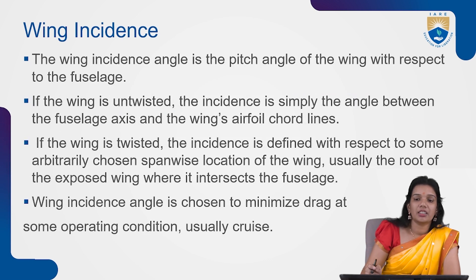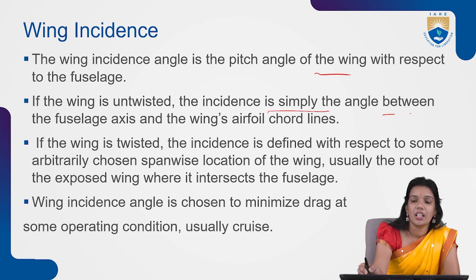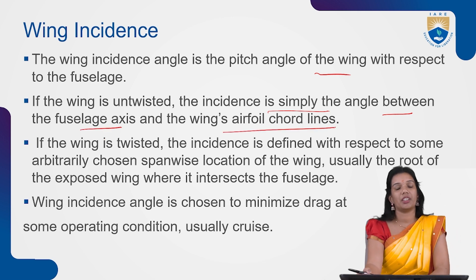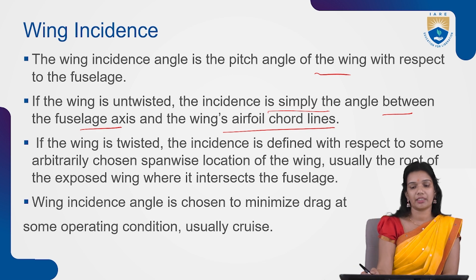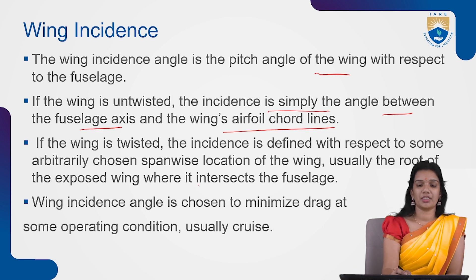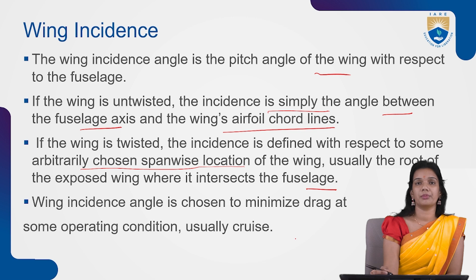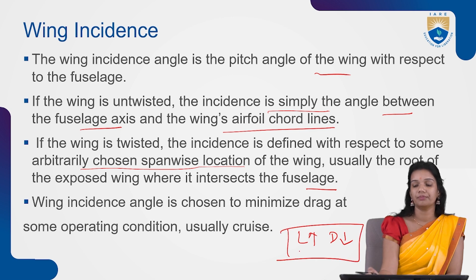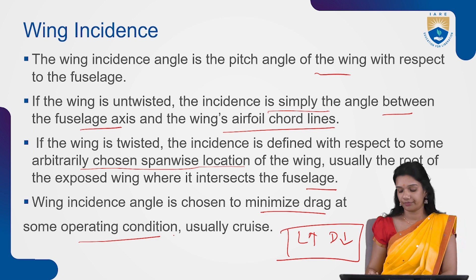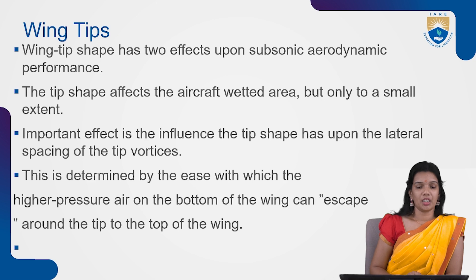Wing incidence is the pitch angle of the wing with respect to the fuselage. If the wing is untwisted, incidence is simply the angle between the fuselage axis and the wing airfoil chord lines. If the wing is twisted, incidence is defined with respect to some chosen spanwise location, usually the root. The overall wing incidence angle is chosen to minimize drag at the cruise operating condition.